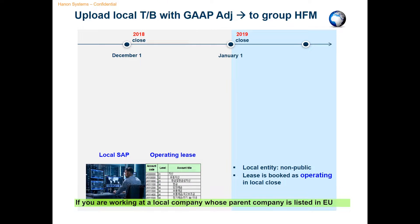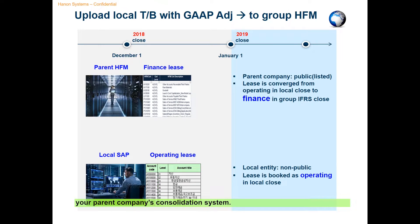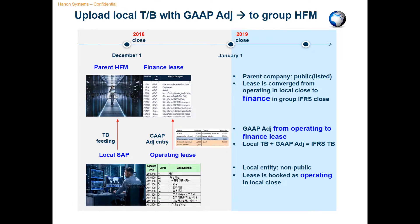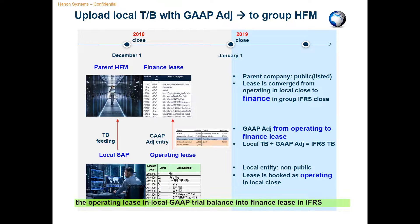If you are working at a local company whose parent company is listed at a European or Asian Stock Exchange, you need to do the local GAAP close first. And then, you need to also prepare IFRS-based trial balance and upload it into your parent company's consolidation system. While lease contracts are booked as operating lease in local statutory close, they should be booked as a finance lease in your parent company's consolidated financial statements in IFRS. Therefore, you are required to make gap-adjusting entries to convert the operating lease in local GAAP trial balance into finance lease in IFRS trial balance for your parent company.